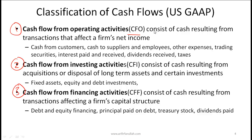CFO consists of cash resulting from transactions that affect a firm's net income, or more specifically the core operating activities of a firm. Cash received from customers is a cash inflow under CFO. Cash paid to suppliers and employees is a cash outflow under CFO. Money spent on operating expenses, trading securities, any interest paid and received under US GAAP, dividends received, and taxes paid also fall under CFO.